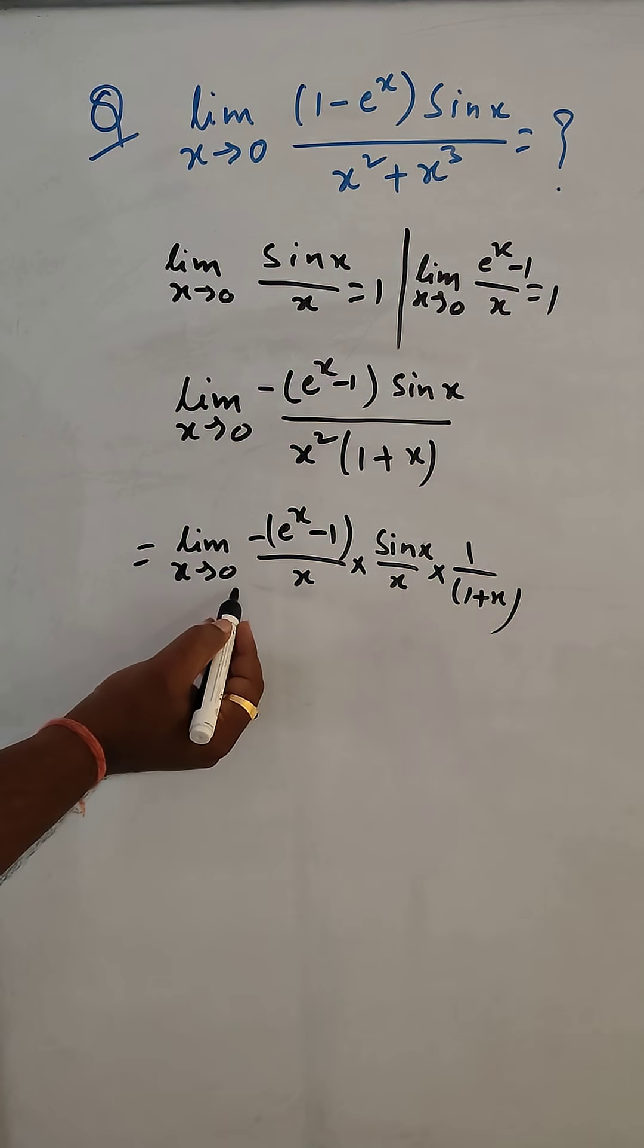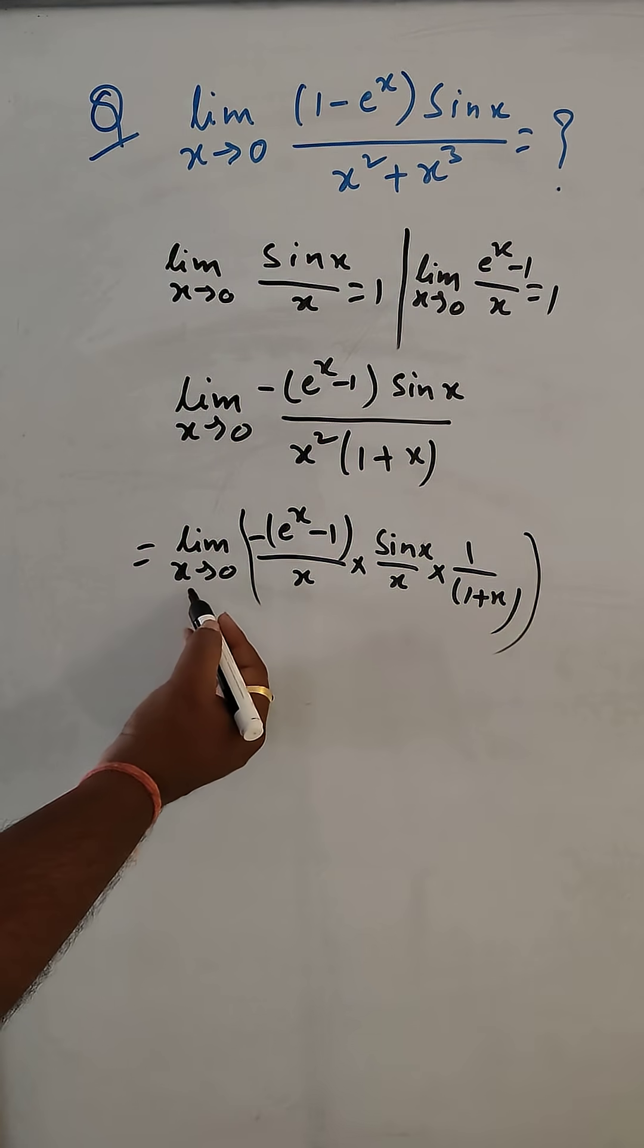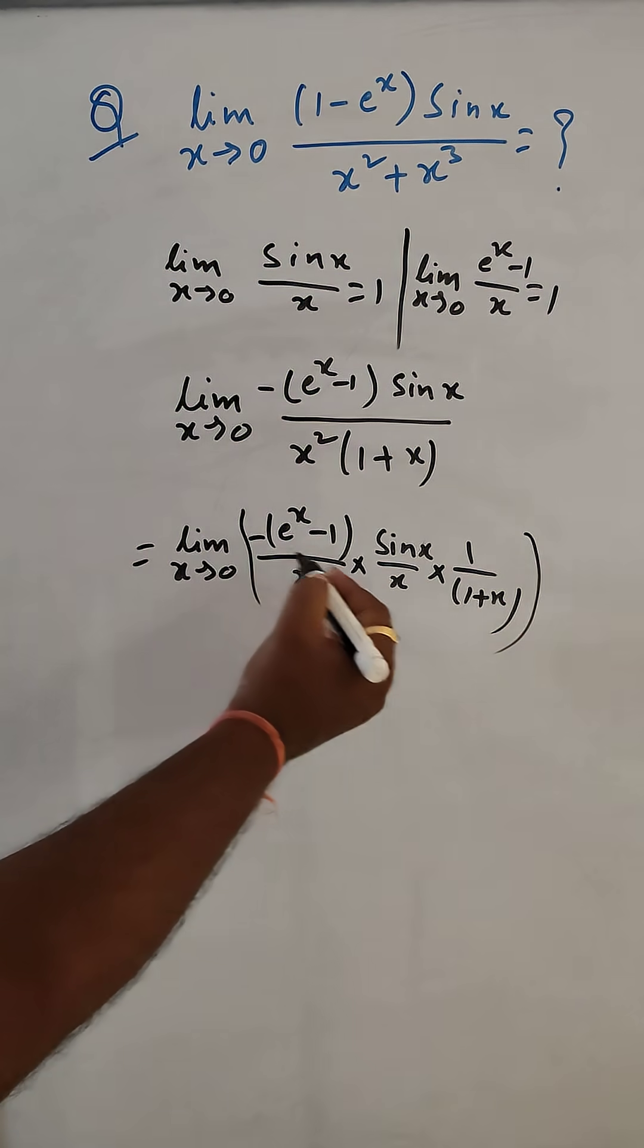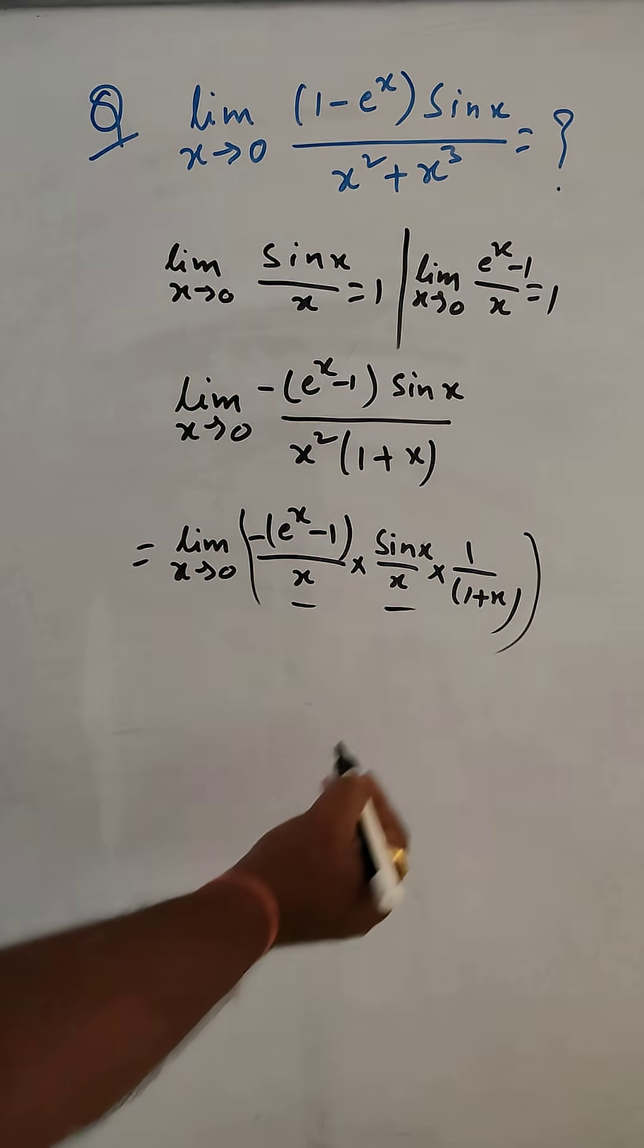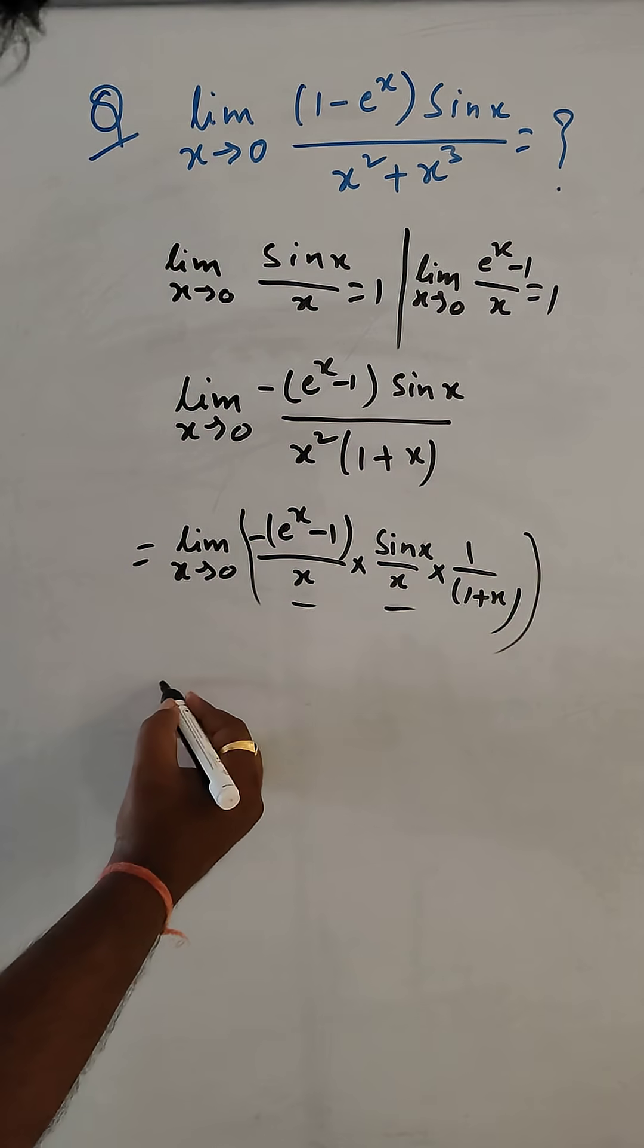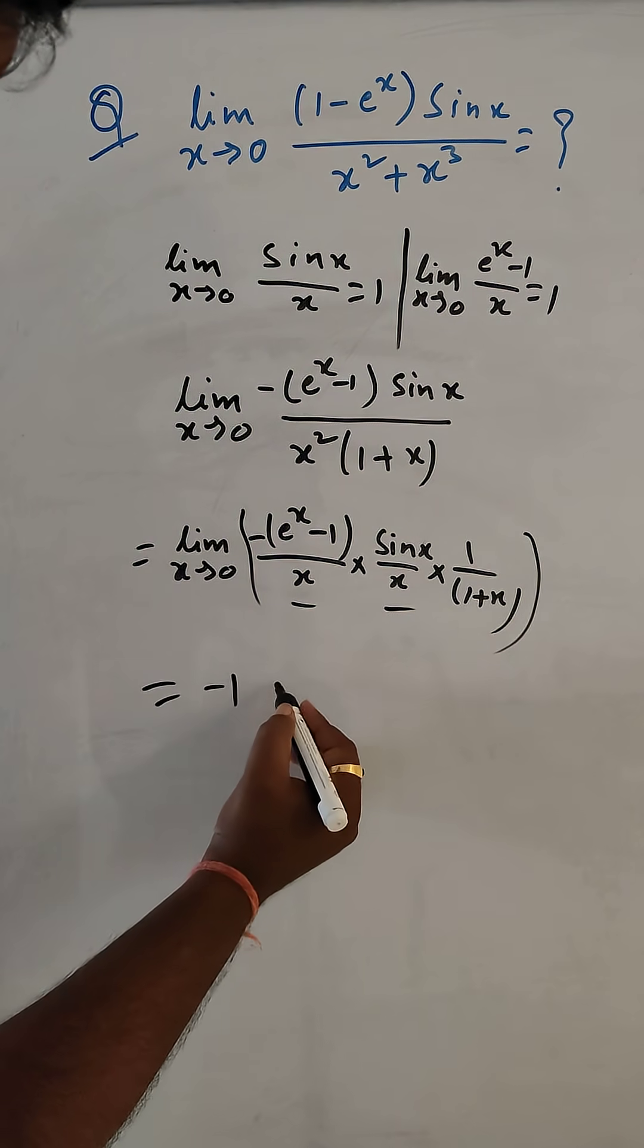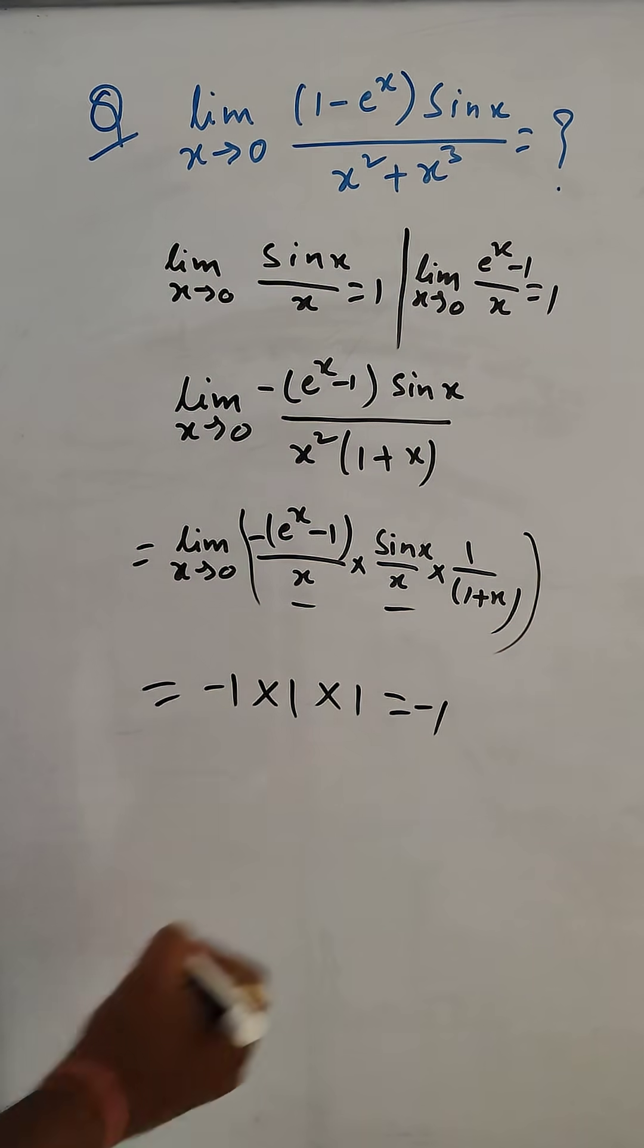Now for the limit x tends to 0: this will be 1, this will be minus 1. Here it is minus, and this is 1. And if you put 0 here, it will be 1. So the answer is minus 1 times 1 times 1, which is minus 1.